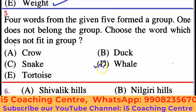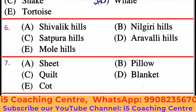Whale gives birth to a baby, while Crow, Duck, Snake, and Tortoise give eggs. Next, sixth example: which is the odd one out — Shivalik Hills, Nilgiri Hills, Satpura Hills, Aravalli Hills, Mole Hills? All others except Mole Hills are located in India.